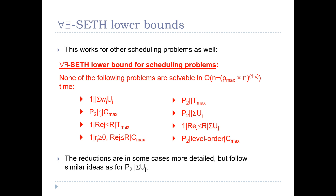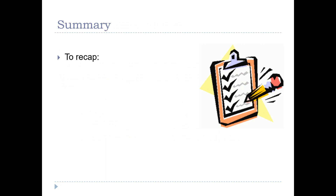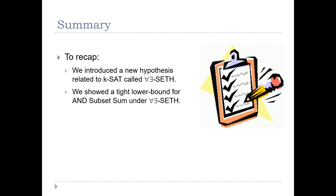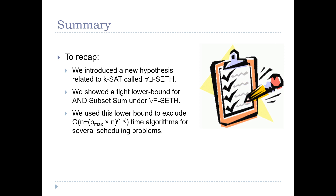To summarize, we introduced a new hypothesis — a variant of SETH related to k-SAT — called the ForAll-Exist SETH. We used it to show a tight lower bound for N-subset sum, which essentially says you cannot solve N-subset sum better than solving each instance separately. We then used this lower bound to exclude runtimes of O(n + p_max) and anything better than O(p_max * n) for several scheduling problems, including P2|sigma|Uj.